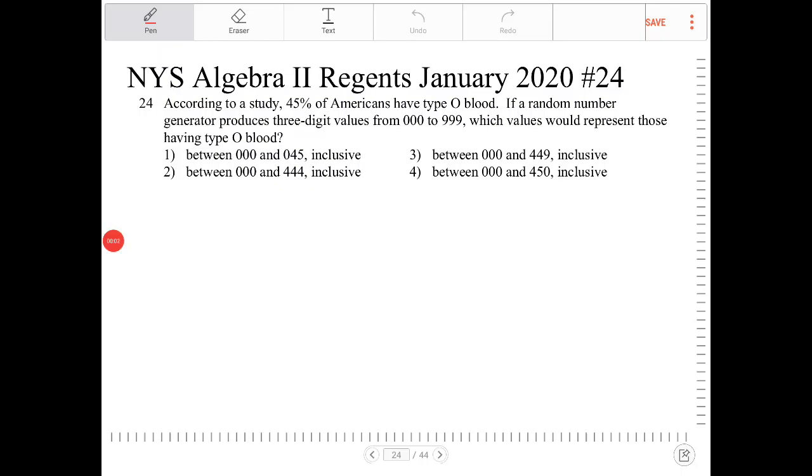According to a study, 45% of Americans have type O blood. If a random number generator produces three-digit values from 00 to 99, which values would represent those having type O blood?